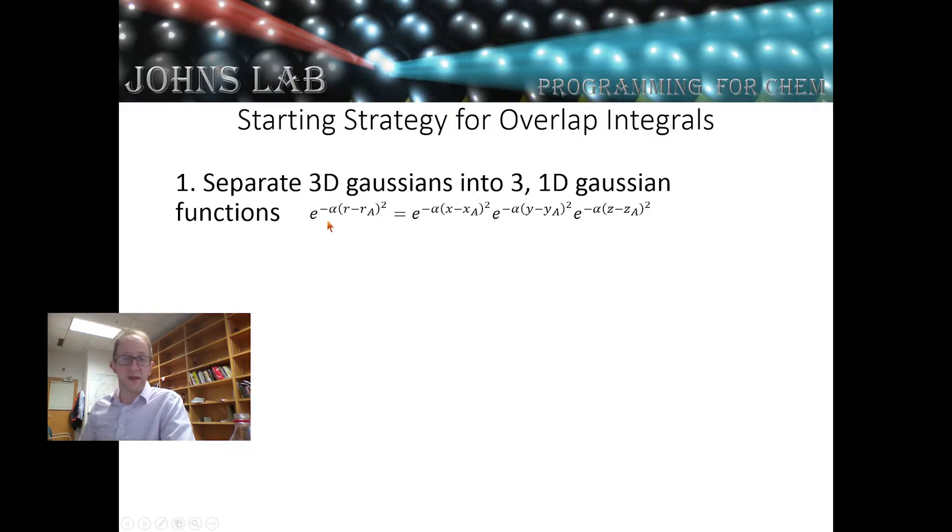We're looking at s orbitals, which are spherically symmetric, and we can write them as a Gaussian in spherical coordinates of e^(-α(r-r_a)²). But we can split that up into three individual Gaussians.